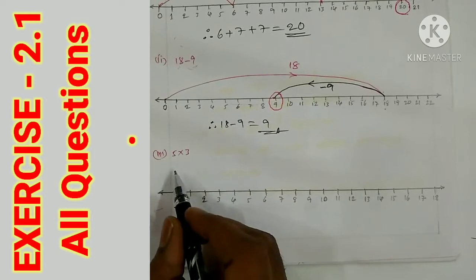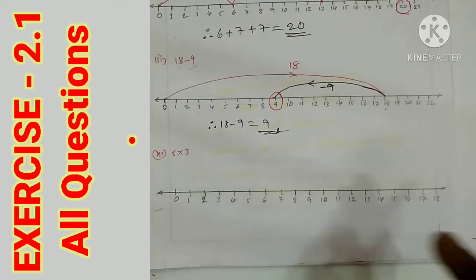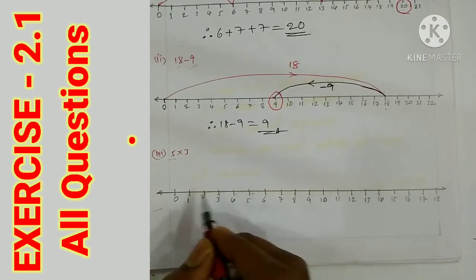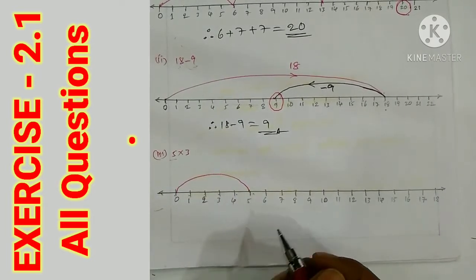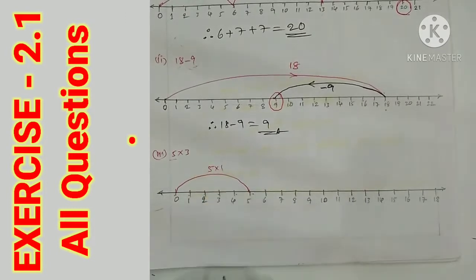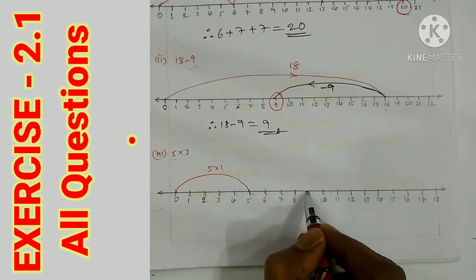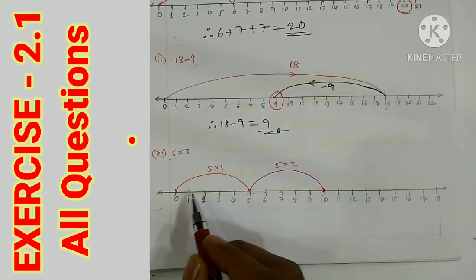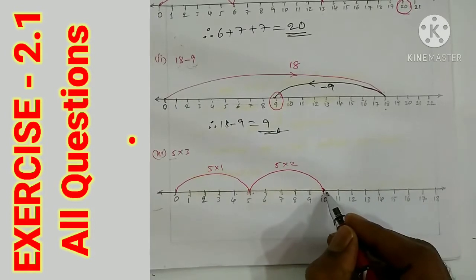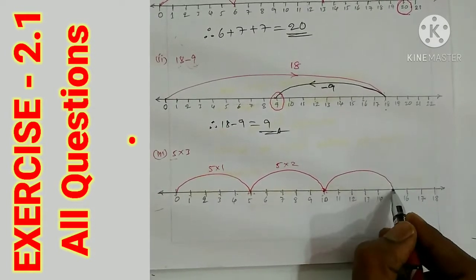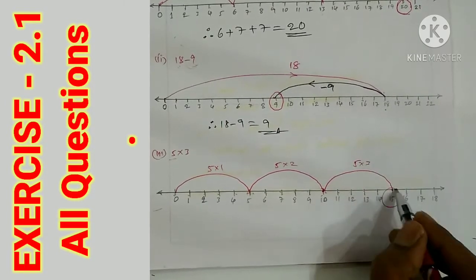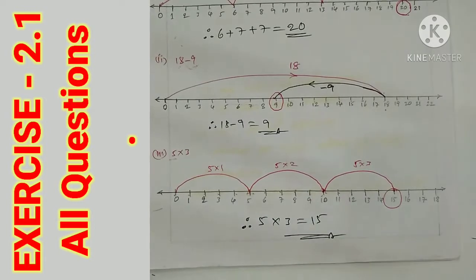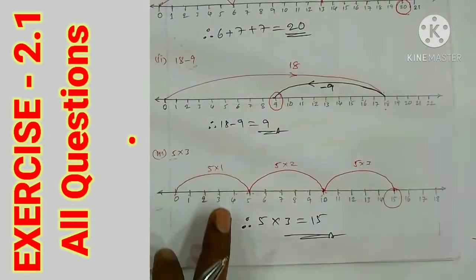Last bit in question 3: 5 × 3, meaning 5 multiplied 3 times. On the number line, start from 0 and jump 5 steps three times: first jump lands on 5, second jump on 10, third jump on 15. Therefore 5 × 3 = 15. So we have addition, subtraction, and multiplication on the number line.